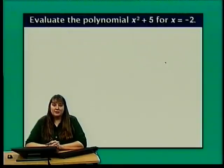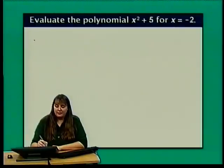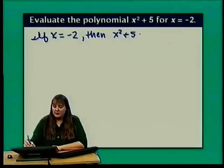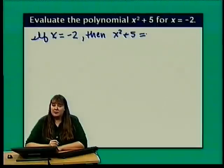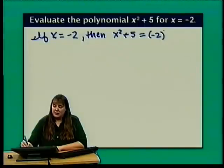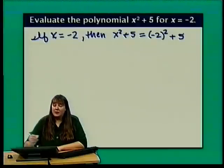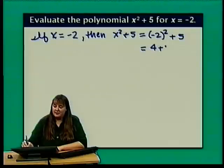Let's evaluate x squared plus 5 for x equal to negative 2. We substitute negative 2 for x, putting it in parentheses: negative 2 squared plus 5. Negative 2 times negative 2 is positive 4, so we have 4 plus 5, which equals 9.